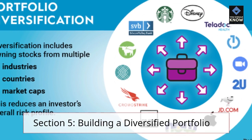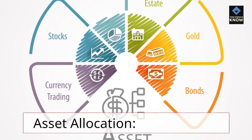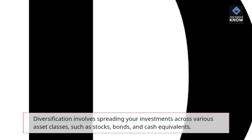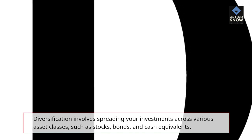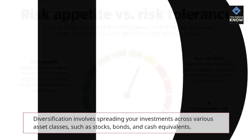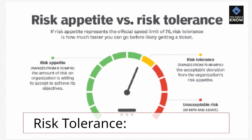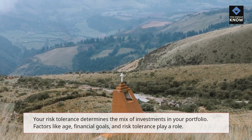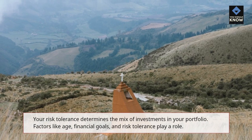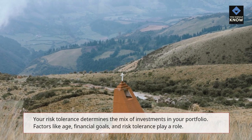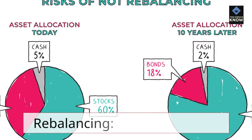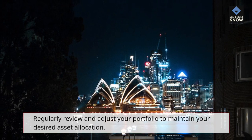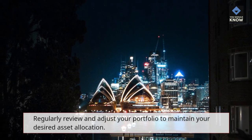Building a Diversified Portfolio. Diversification involves spreading your investments across various asset classes, such as stocks, bonds, and cash equivalents. Your risk tolerance determines the mix of investments in your portfolio — factors like age, financial goals, and risk tolerance all play a role. Regularly review and adjust your portfolio to maintain your desired asset allocation.